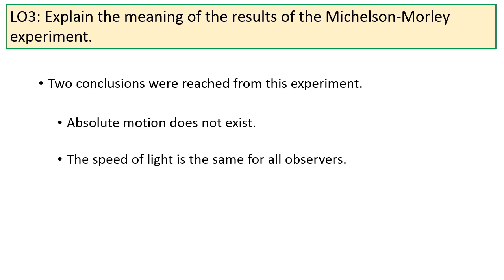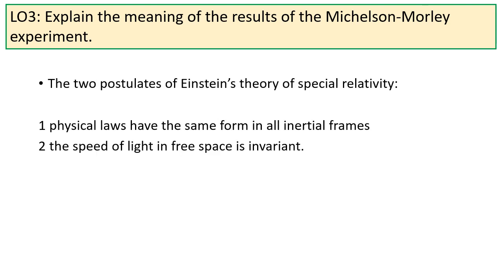Taken together, these two ideas formed the basis of Einstein's special relativity. They were that absolute motion does not exist, and that the speed of light is the same for all observers. Einstein formulated these as two postulates. Physical laws have the same form in all inertial frames, and the speed of light in free space is invariant. These two postulates form the basis of special relativity.